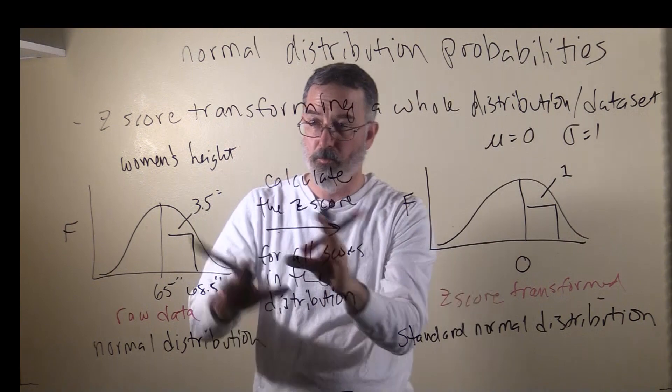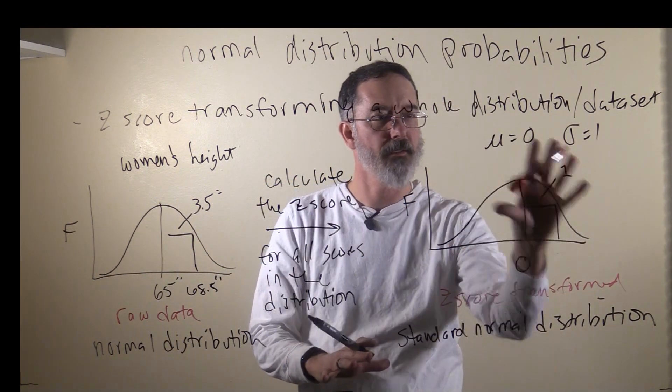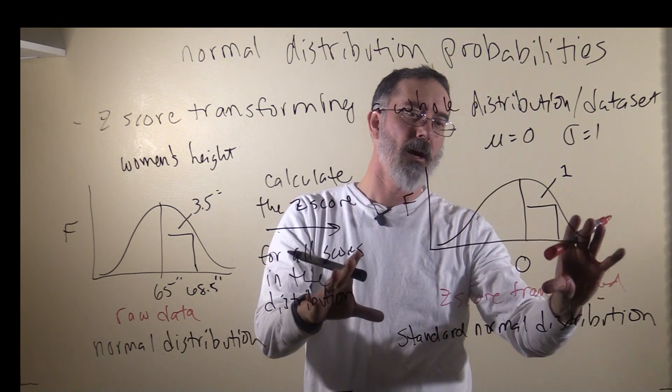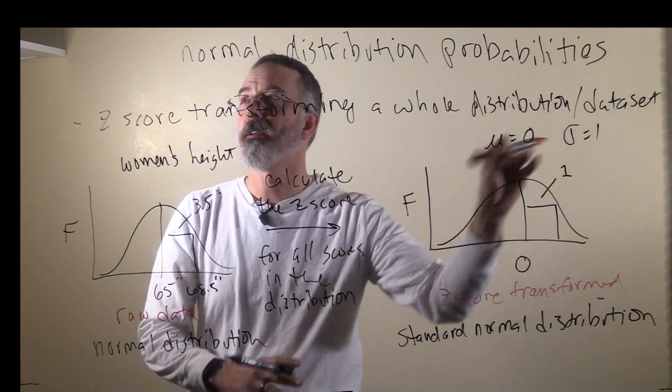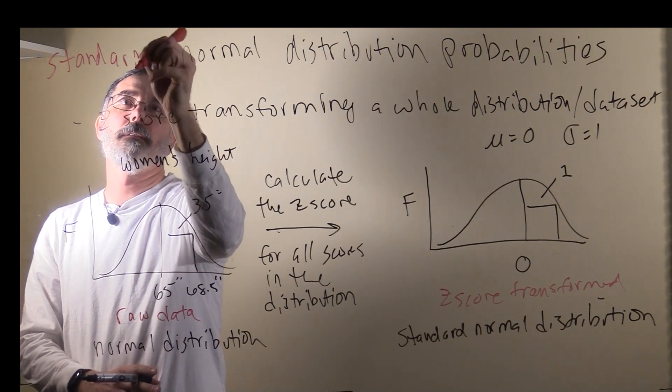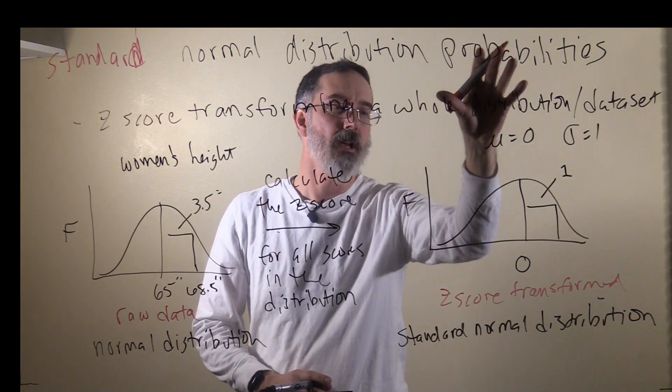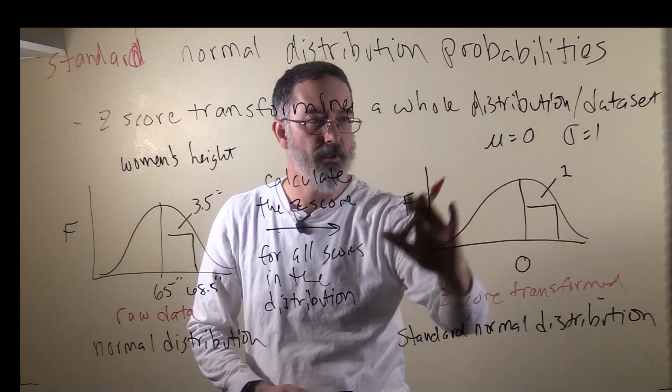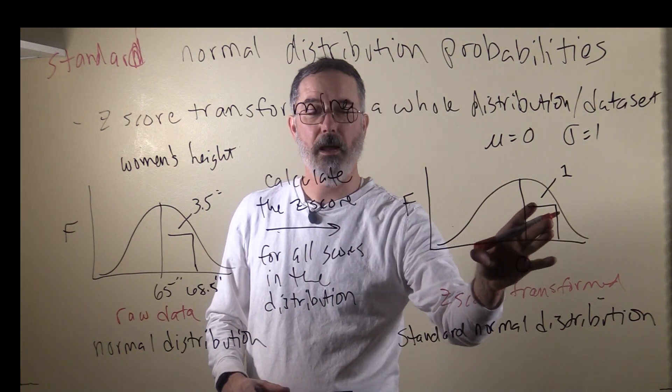All variables that have a normal distribution and have been z-score transformed therefore share this exact same distribution. These are really common. What we're going to talk about for normal distribution probabilities, you could call it standard normal distribution probabilities, because whenever we talk about probabilities with a normal distribution, we use the standard normal distribution as our reference. That's what we're going to be doing as we move forward.